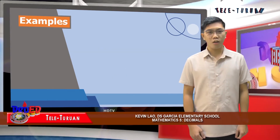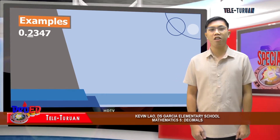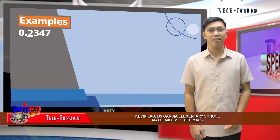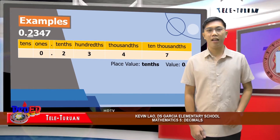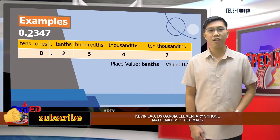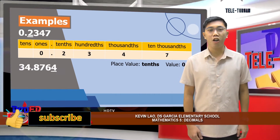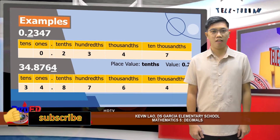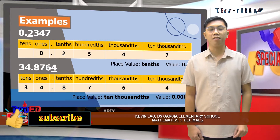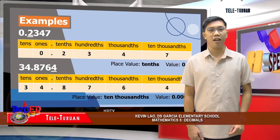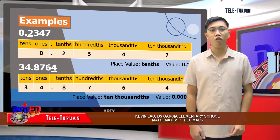Let's take a closer look at these examples. In two thousand three hundred forty-seven ten-thousandths, the underlined digit is two. Its place value is tenths, while its value is two tenths. In the second example, the underlined digit is four. The place value of four in thirty-four and eight thousand seven hundred sixty-four ten-thousandths is ten-thousandths, while its value is four ten-thousandths.